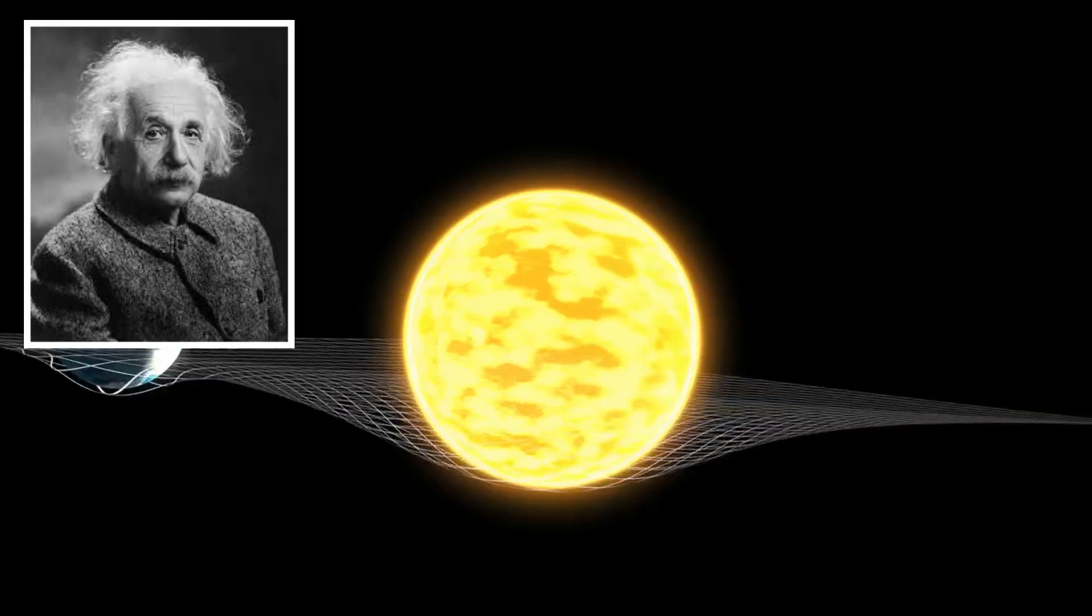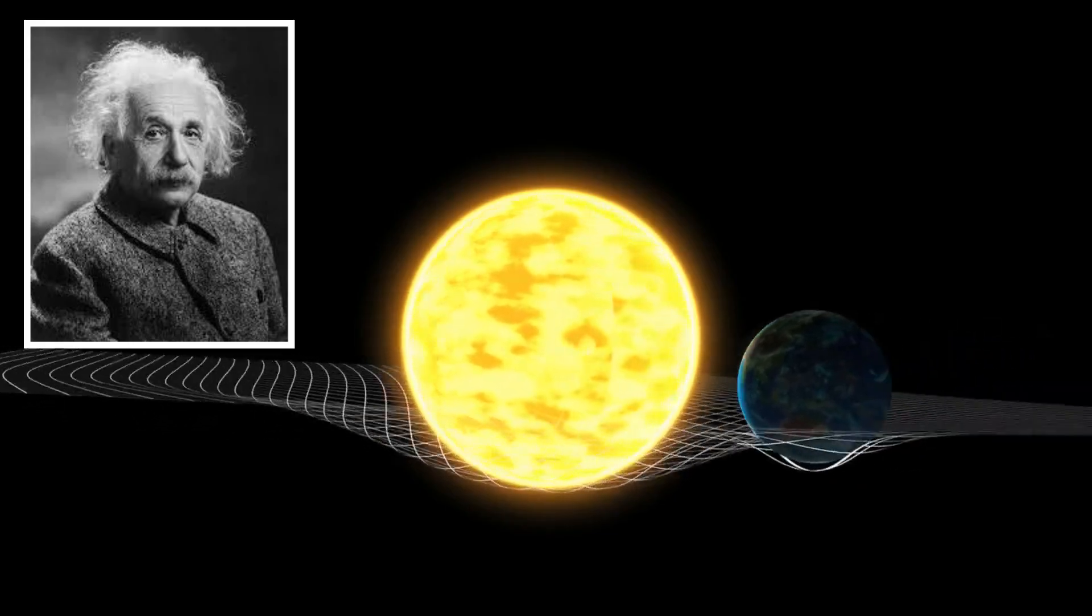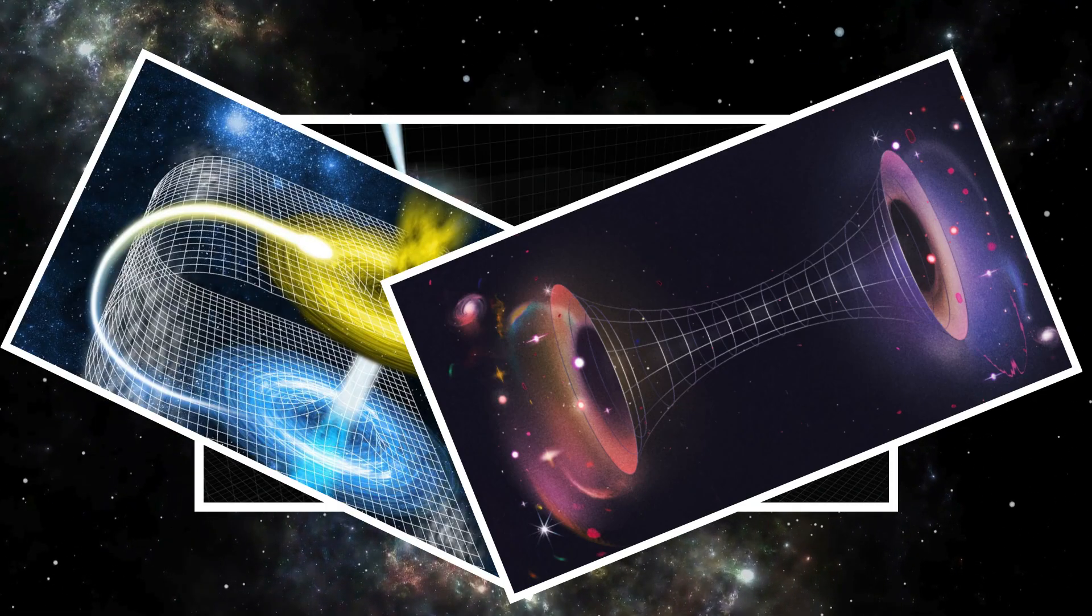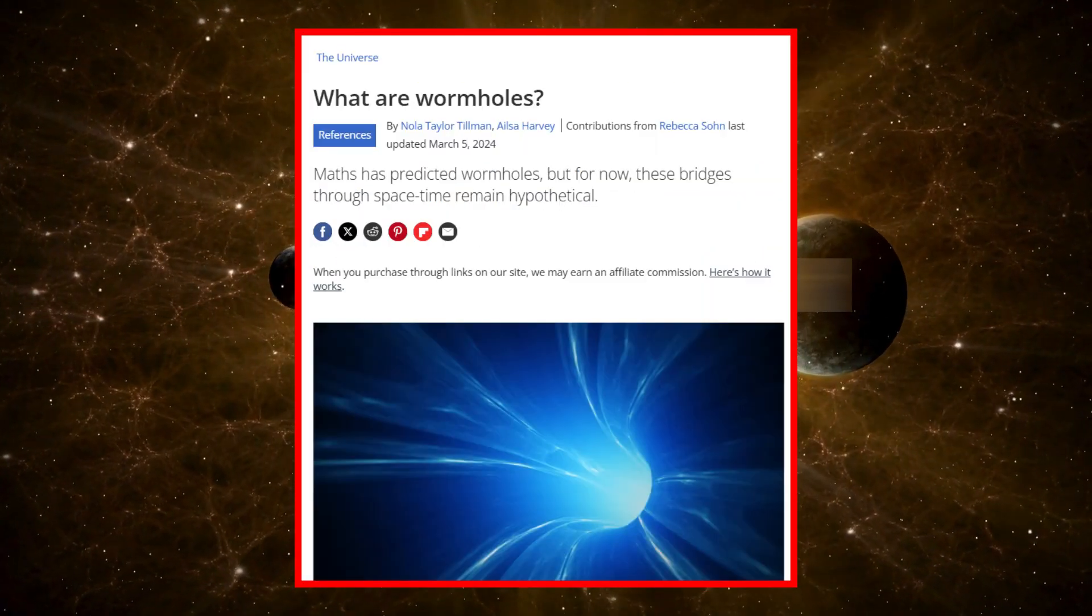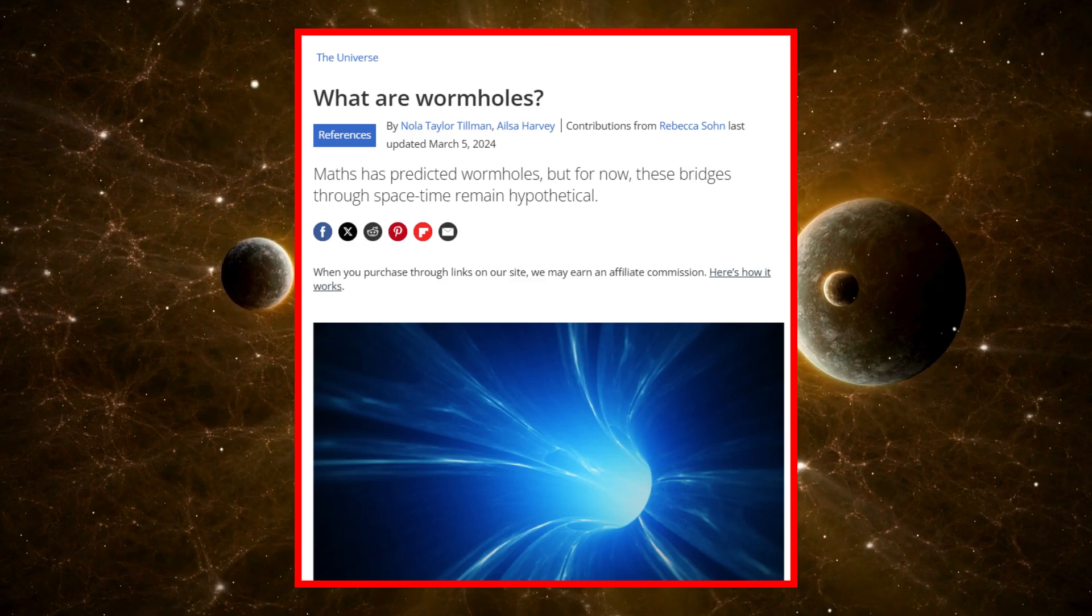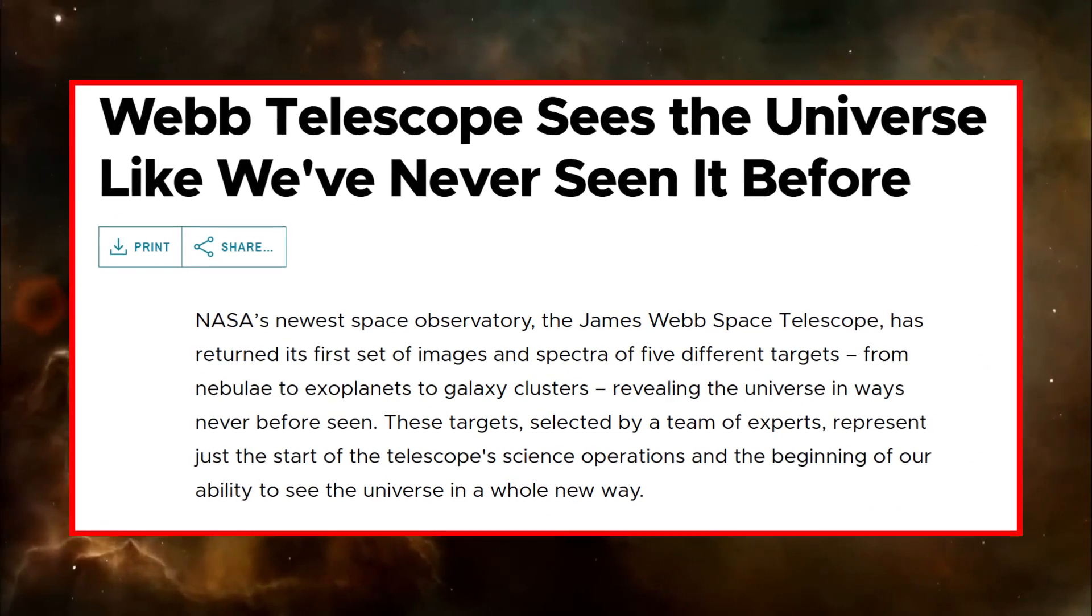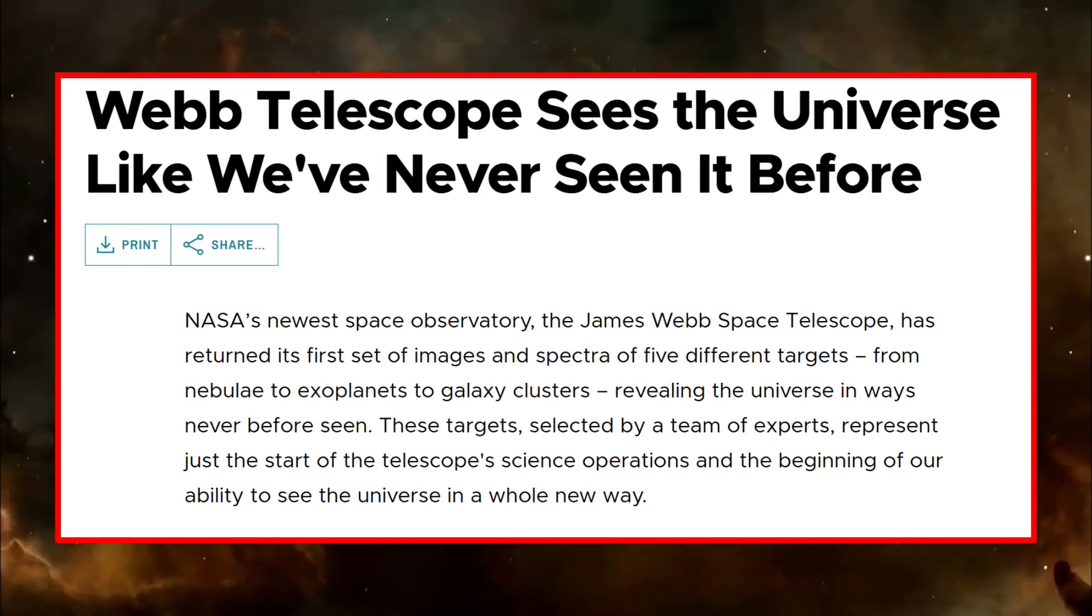This has led some scientists to question whether our current models of gravity, based on Einstein's general relativity, are incomplete. Even more intriguing is the possibility that the object is connected to wormholes, hypothetical passages through space-time that could link distant regions of the universe or even different dimensions. If this is true, it could offer the first concrete evidence of phenomena that have only existed in theoretical physics until now.